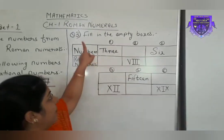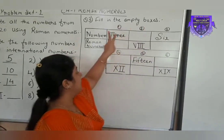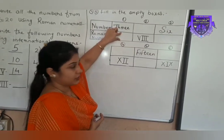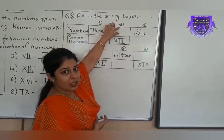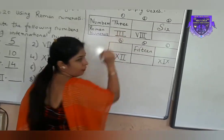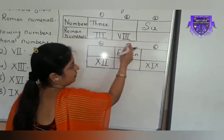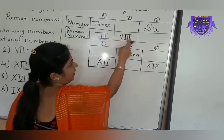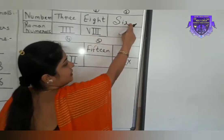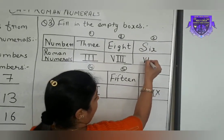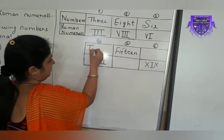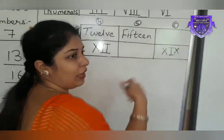Moving further to question number 3: fill in the empty boxes. Numbers are given in spellings — words — and we have to write the Roman numerals. Where Roman numeral is given, we have to write the spelling of that number in words. First is 3: how do we write 3 in Roman numerals? Three times I. Second one is V then three times I. V means 5, three times I means 3, so 5 plus 3 equals 8 — write 'eight' here. Third one is 6: how do we write 6? 5 plus 1. Then X and two times I: 10 plus 2 gives us 12. The remaining two you have to do by yourself.